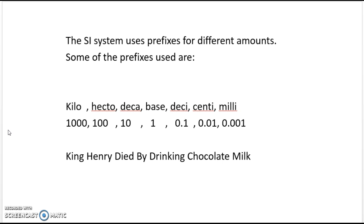You will have to memorize those prefixes, and in order to do that we have a nice little acronym: 'King Henry Died By Drinking Chocolate Milk' — it's probably not true, but it'll help you remember. King is kilo, Henry is hecto, Died is deca, By is the base, Drinking is desa, Chocolate is centa, and Milk is mili. Notice that desa and deca are very similar — one has an 'i,' one has an 'a.'